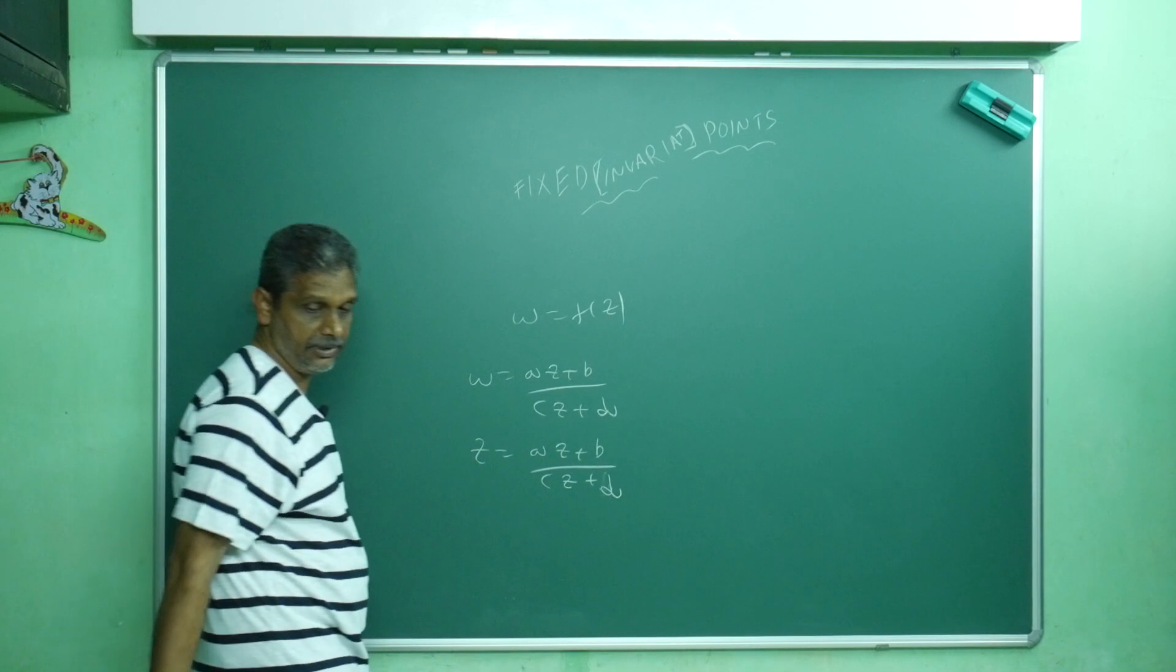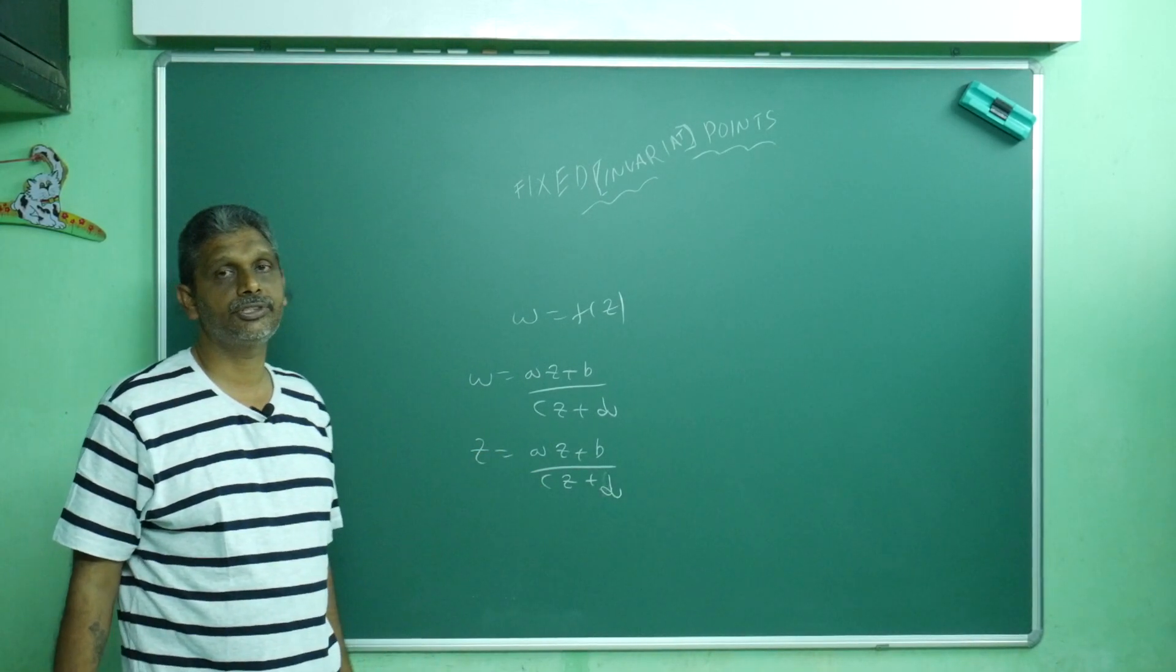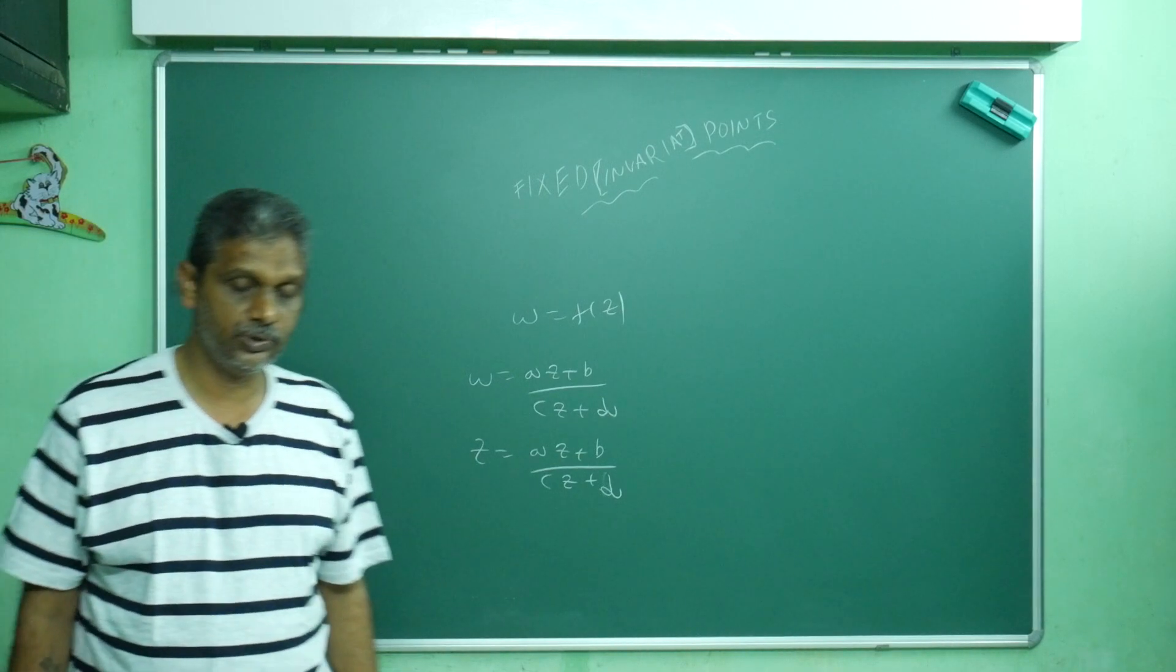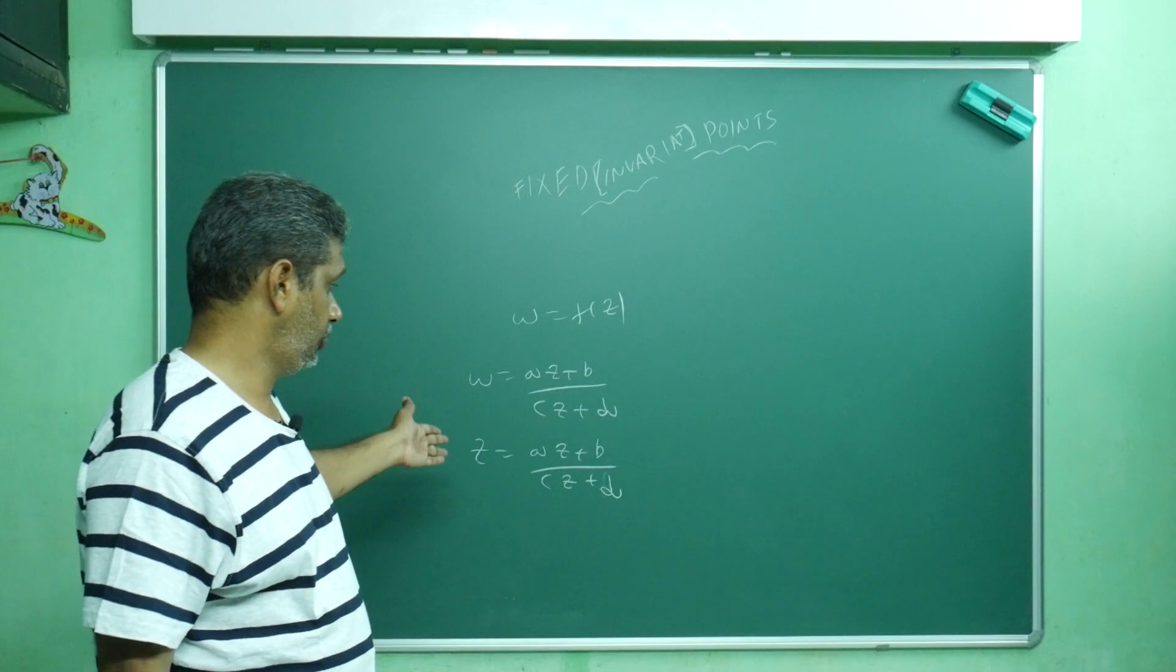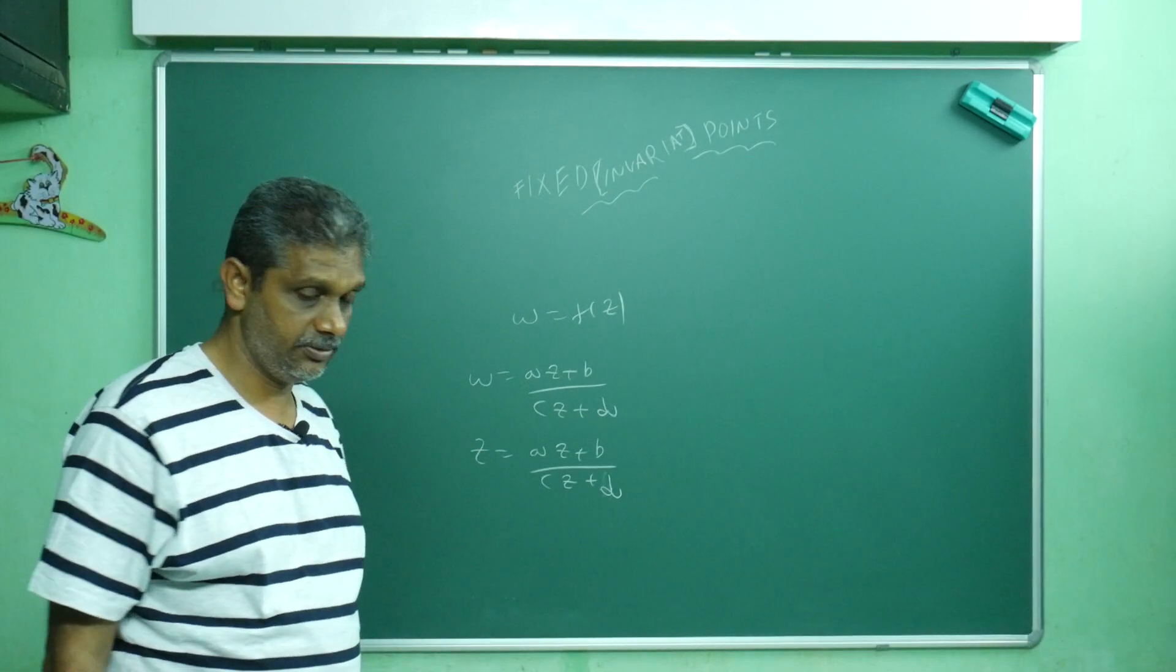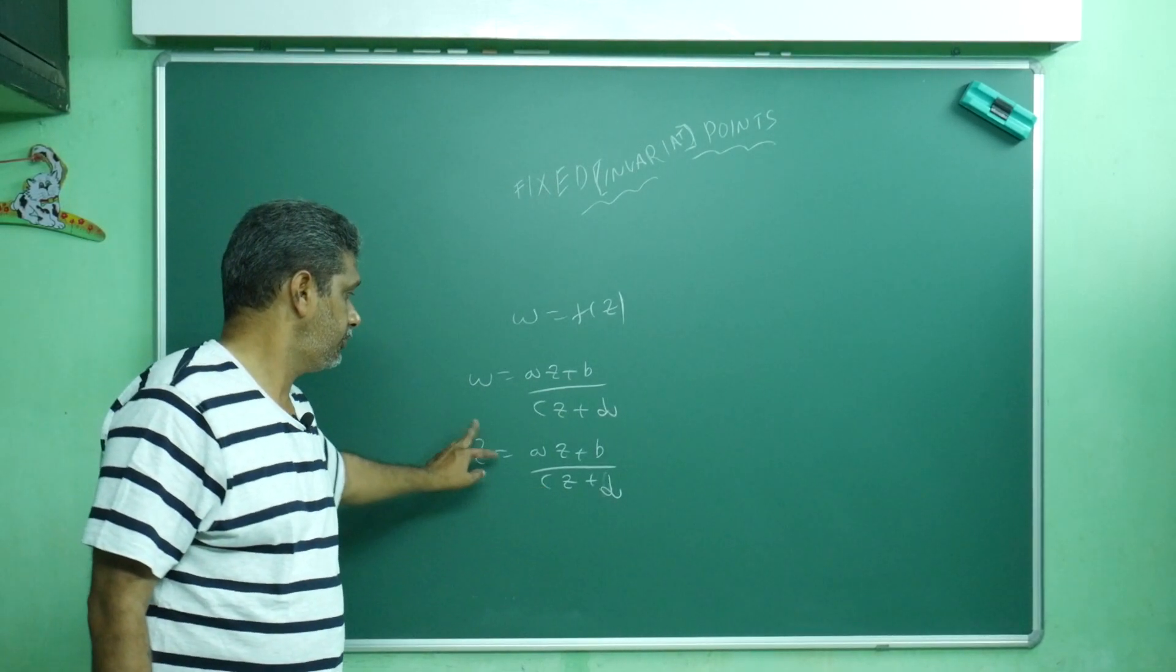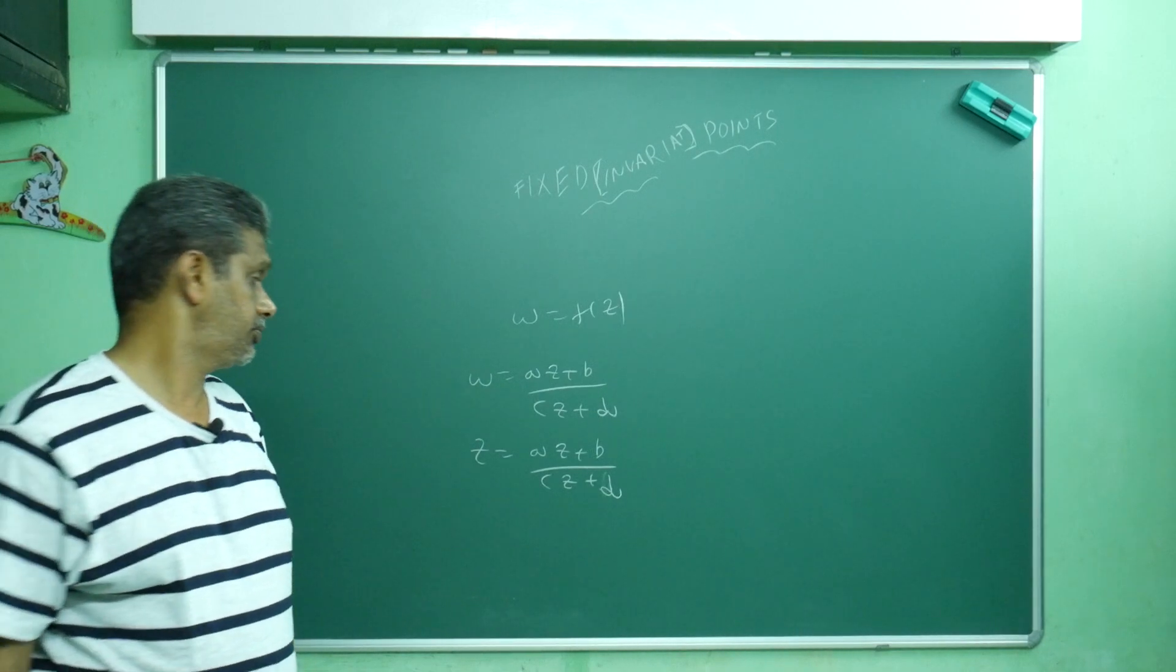Cross multiply and you will get a quadratic equation. So you will get two fixed points. Degree two means you will have minimum two roots. A quadratic equation has maximum two roots, so if you solve you will get two roots. Based on this, we will do a few problems.